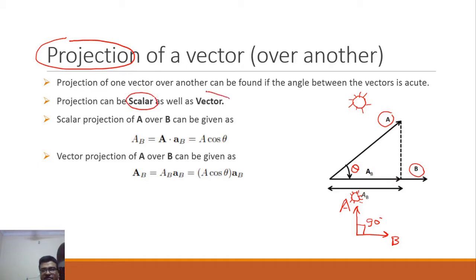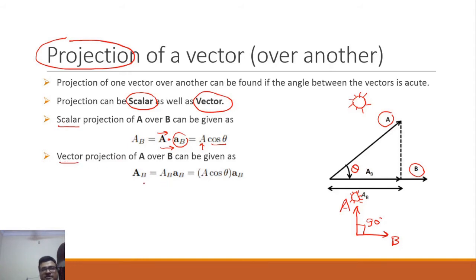Scalar projection says that if you multiply vector a with the unit vector of b — the unit vector of b signifies the direction of b — you get a dot multiplication. Since the unit vector has magnitude one, we are left with a·cos(θ). This result is called scalar projection.